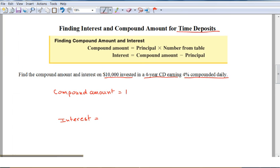The formula says the compound amount, you just take the principal and multiply it by the number from the table, which is 1.17350058 for four years with 4%. This number is going to give us $11,735.01. So this is the compound amount and we answered the question.